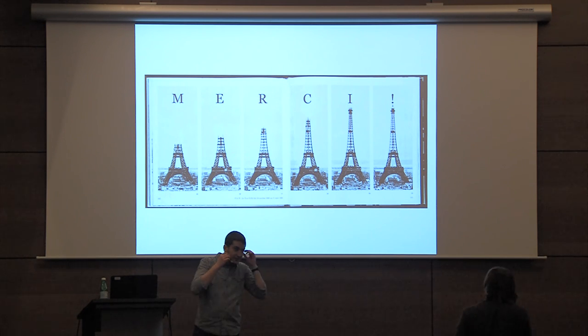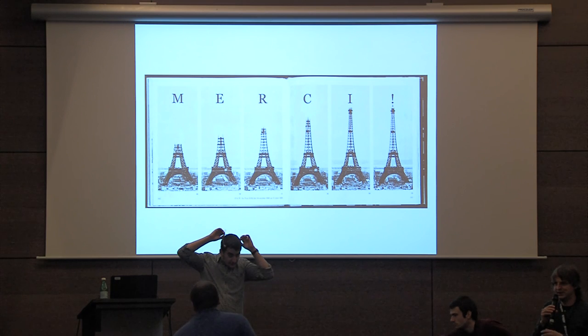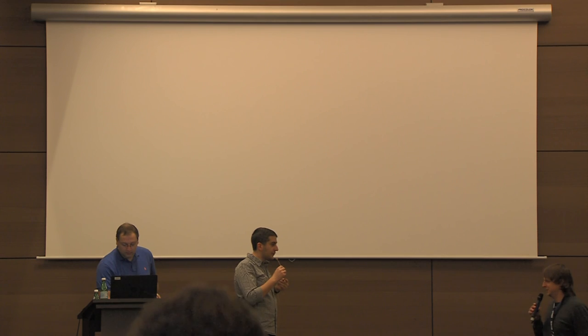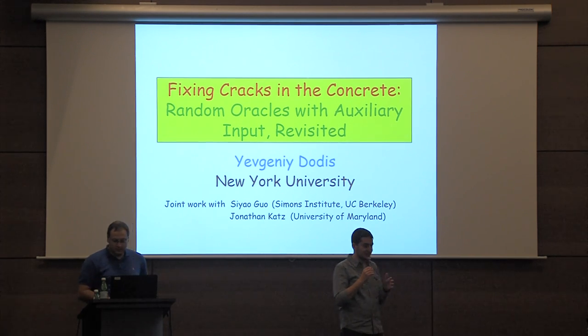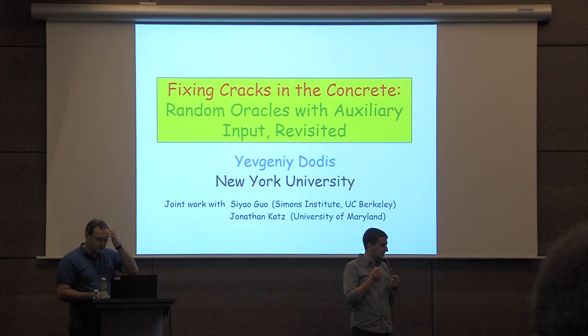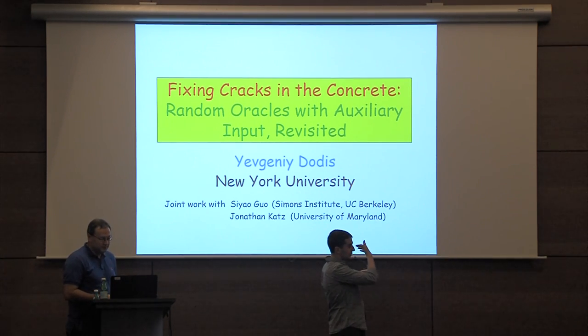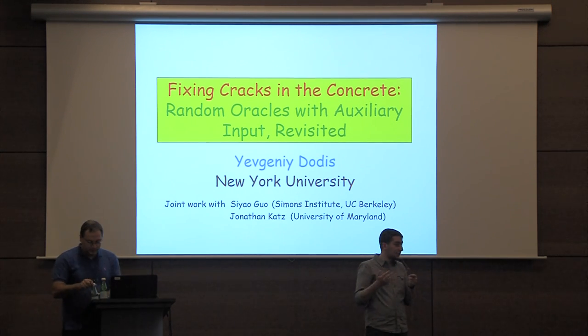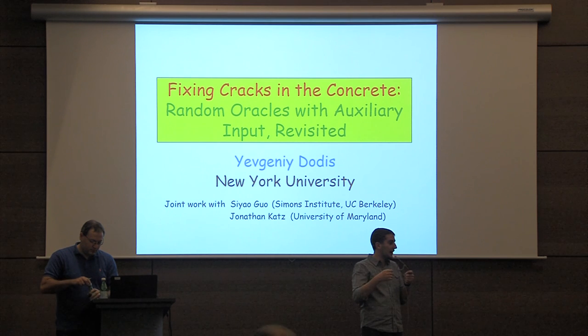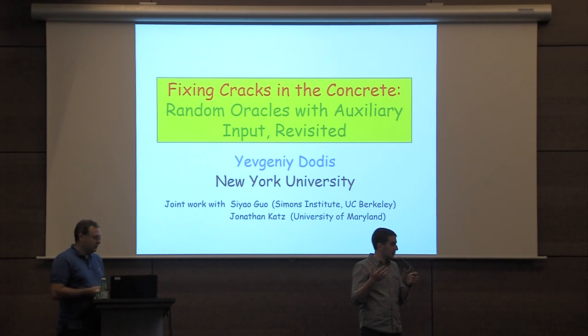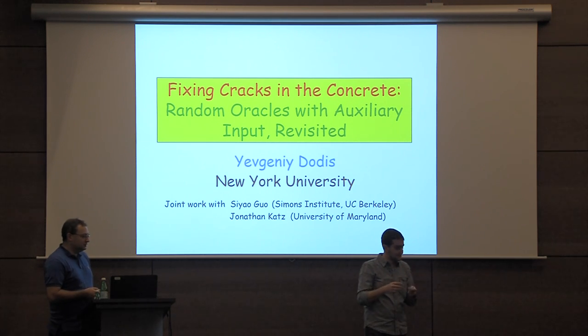Thanks a lot for this very nice talk. We have time for one or two short questions. What would be a killer application for updatable garbled circuits? For updatable garbled circuits specifically, there's not yet a killer application — it's just a natural question. For updatable randomizing codings you get all the applications mentioned. For updatable anything in general: not having to re-obfuscate if you change one gate is a natural property to want from an obfuscation scheme.